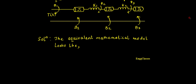To draw the equivalent mathematical model, I need to identify the number of angular displacements. Here we have theta1, theta2, and theta3 — three angular displacements — and correspondingly I need to draw three nodes. At theta1, I have moment of inertia j1 and friction b1 which are exclusively at theta1.